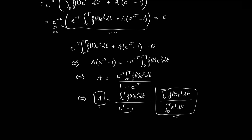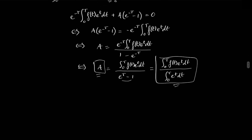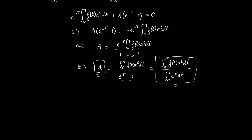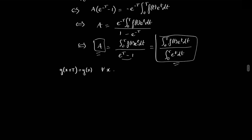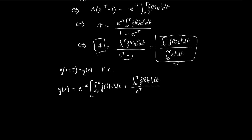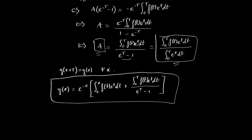This value of the constant of integration a is a necessary and sufficient condition for the solution y to be T-periodic, because with this value of a we guarantee that y(x + T) equals y(x) for any value of x. So as a conclusion, the unique T-periodic solution is y(x) equal to exponential of minus x times the integral from 0 to x of f(t) e^t dt, plus the integral from 0 to T of f(t) e^t dt, divided by (e^T minus 1). This is the only solution of the differential equation that is also T-periodic.